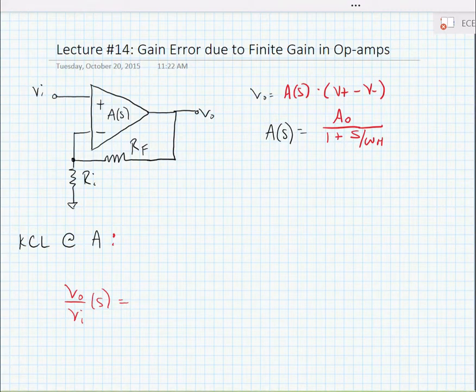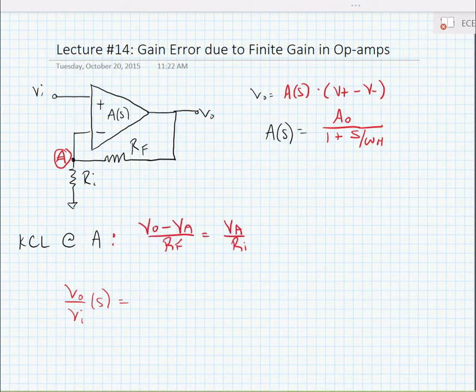To solve for this op-amp's gain in feedback, we can label this node A. Now we can do KCL at node A, and we'll write that expression out right now, noting that no current is going to go into the op-amp. The current is just going to be leaving node A towards RI and towards RF. So here we have the current going through RF.